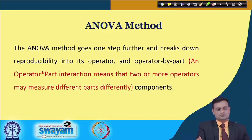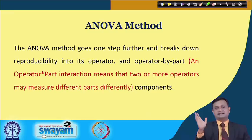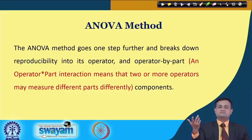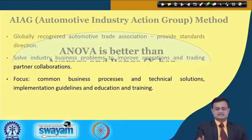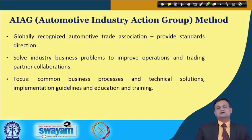Another method is ANOVA, which has the advantage of considering both within and between variation. In brief, the advantage of this method is that it considers the interaction between the operator and the part. Many times the operator's skill of measurement influences the measurement system in ways not captured by X-bar and R. When this interaction is a concern, ANOVA is a better method. The AIAG — Automotive Industry Action Group — is a well-established body recommending best practices for measurement systems and has published a manual on this.